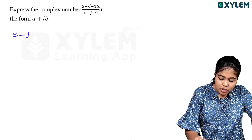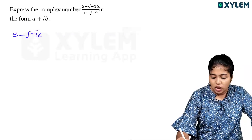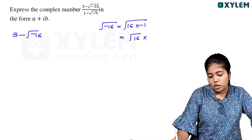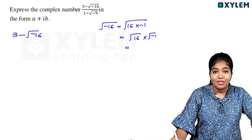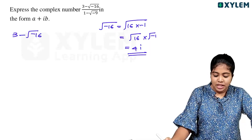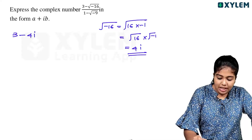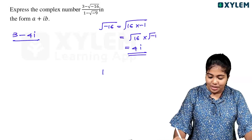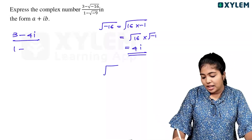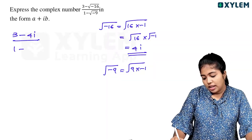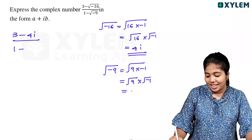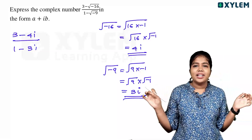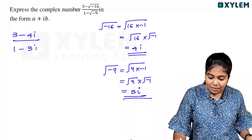We call this 3 minus root of minus 16. Root of minus 16 is similar to root of 16 into minus 1, which equals 4i. So the expression becomes 3 minus 4i. Then we have (3 minus 4i) divided by (1 minus 3i).